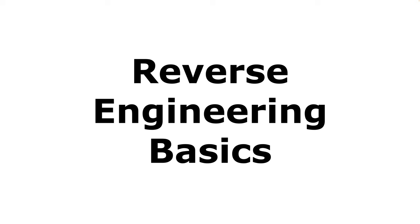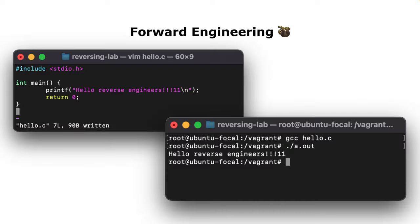This time we will get very technical and I will tell you about reverse engineering basics - stuff that gets you started very fast. First of all, you all know how to forward engineer: you write program code, you compile it with GCC, and then this hello world is just translated into a binary that you can execute.